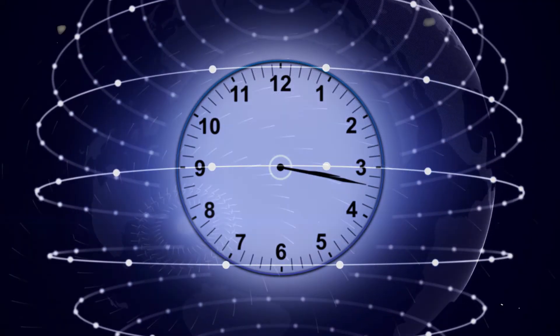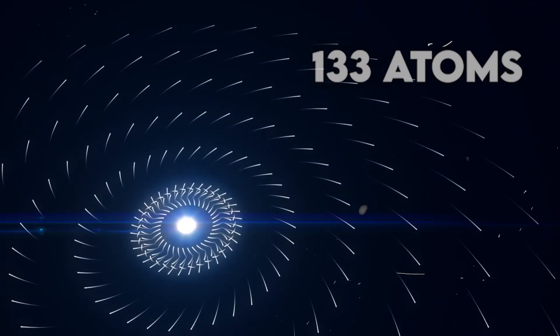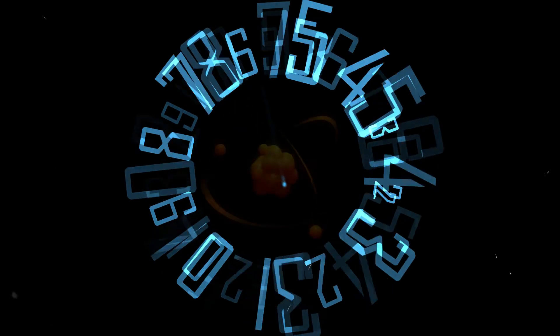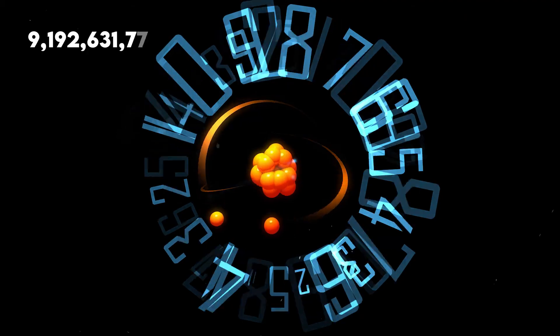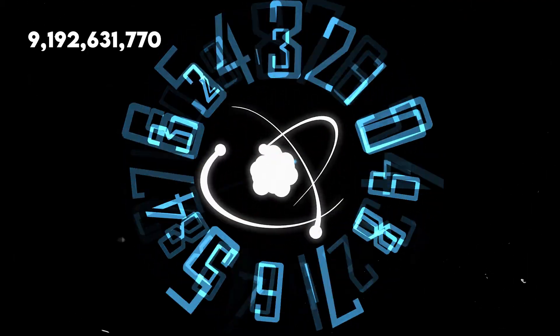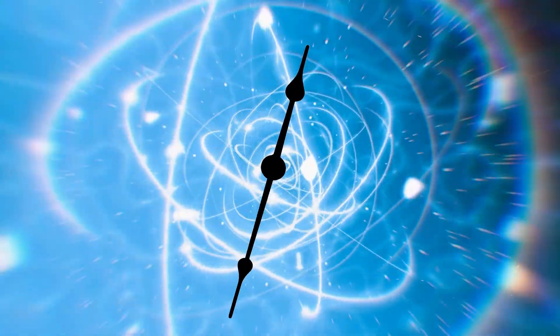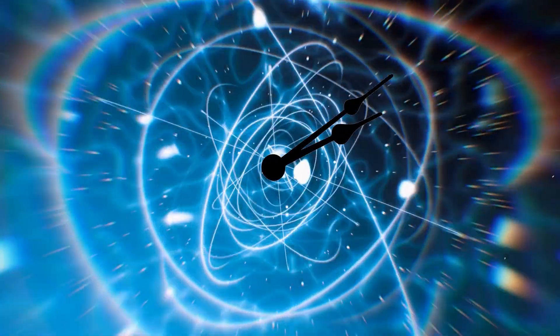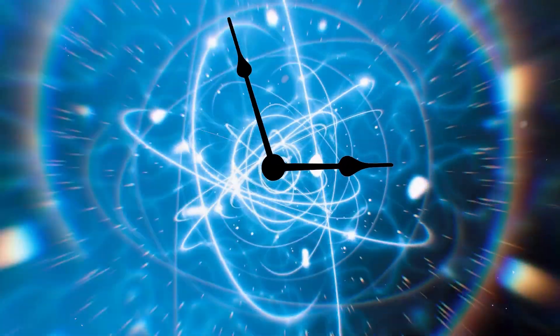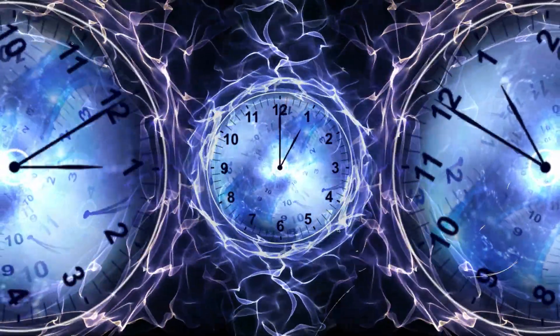One of the primary advantages of using atoms as a resonator is their extreme consistency in resonance frequency. For instance, every cesium-133 atom resonates at exactly 9,192,631,770 cycles per second. This precise and stable frequency forms the foundation for time measurement, making atomic clocks unmatched in their accuracy.